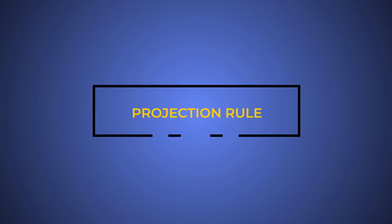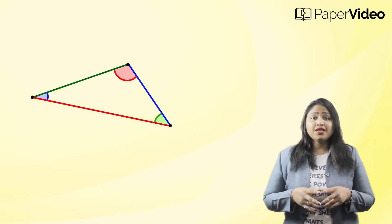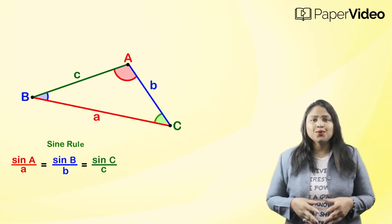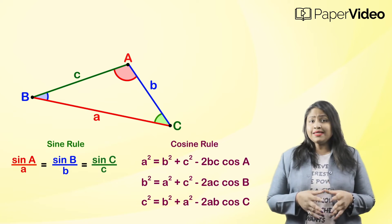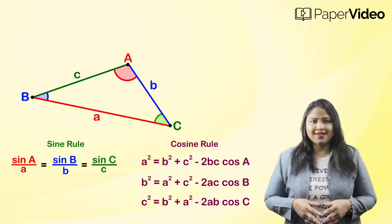Projection rule. In previous videos we discussed sine and cosine rules which are used to find the missing sides or angles of a triangle.